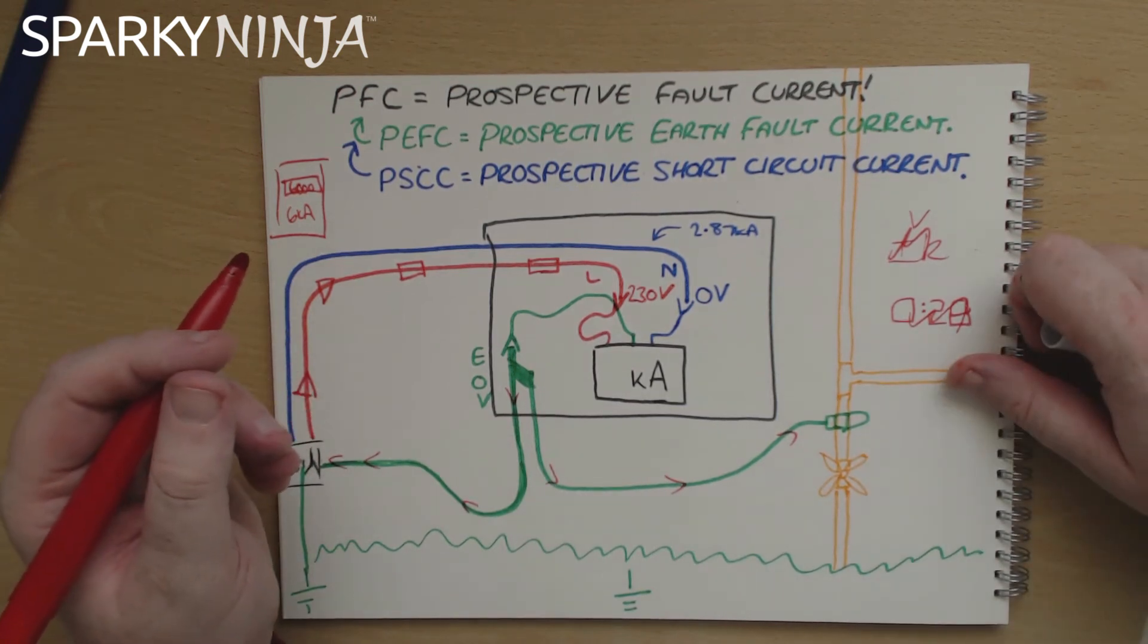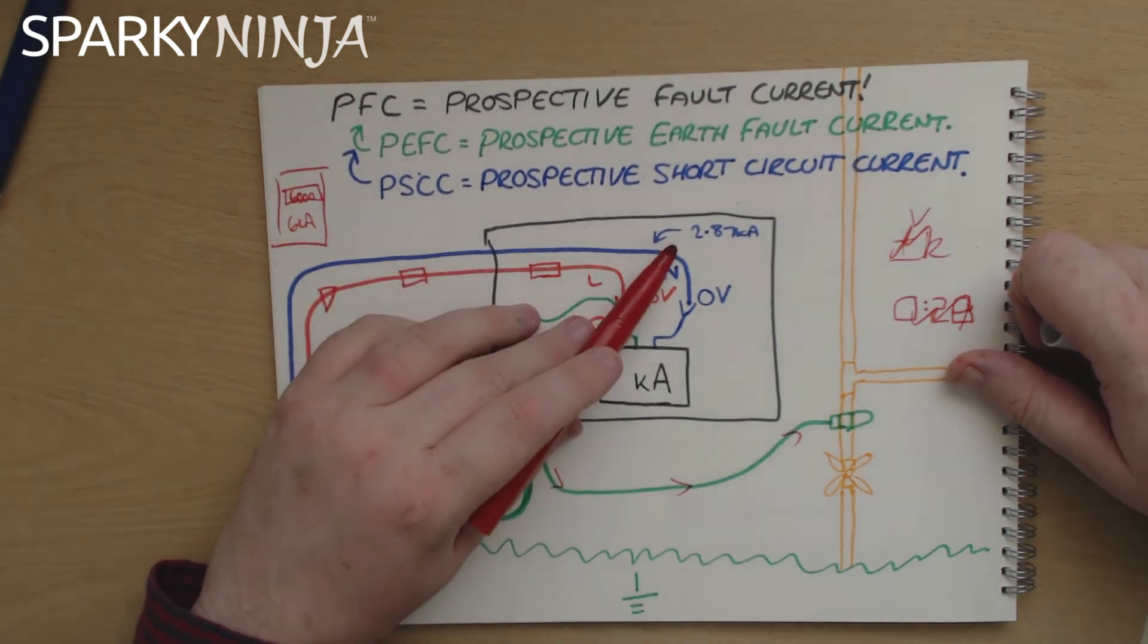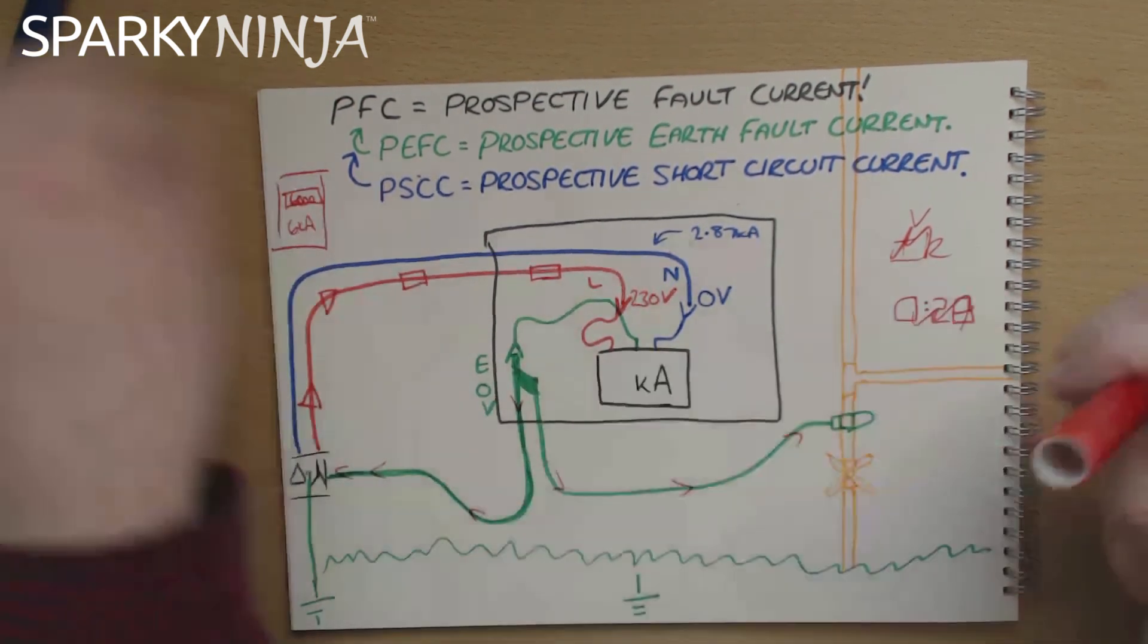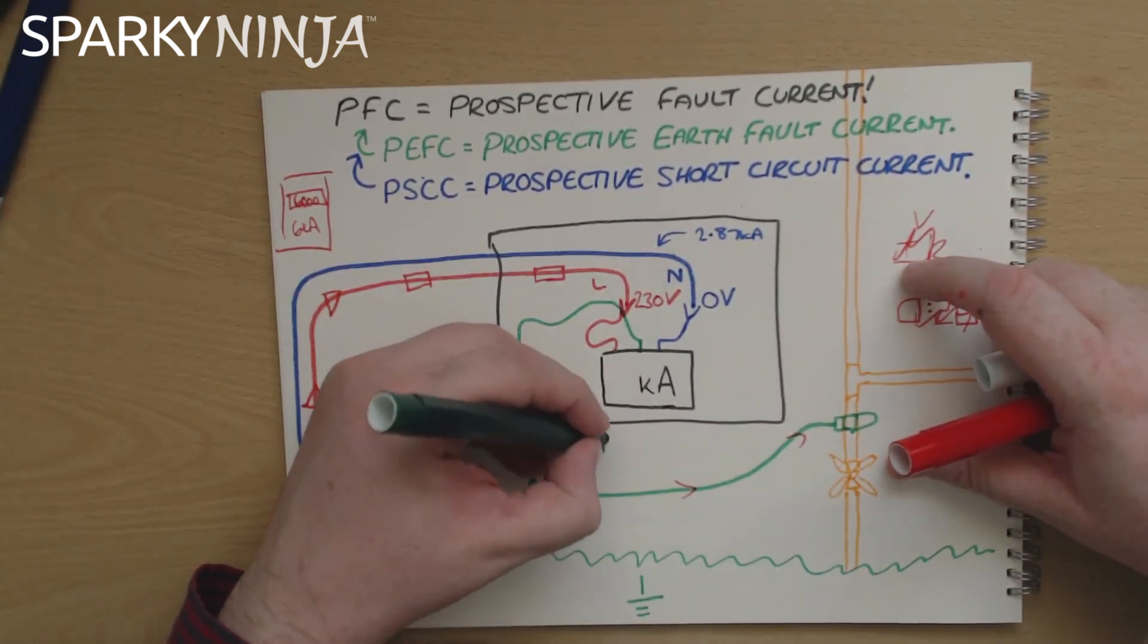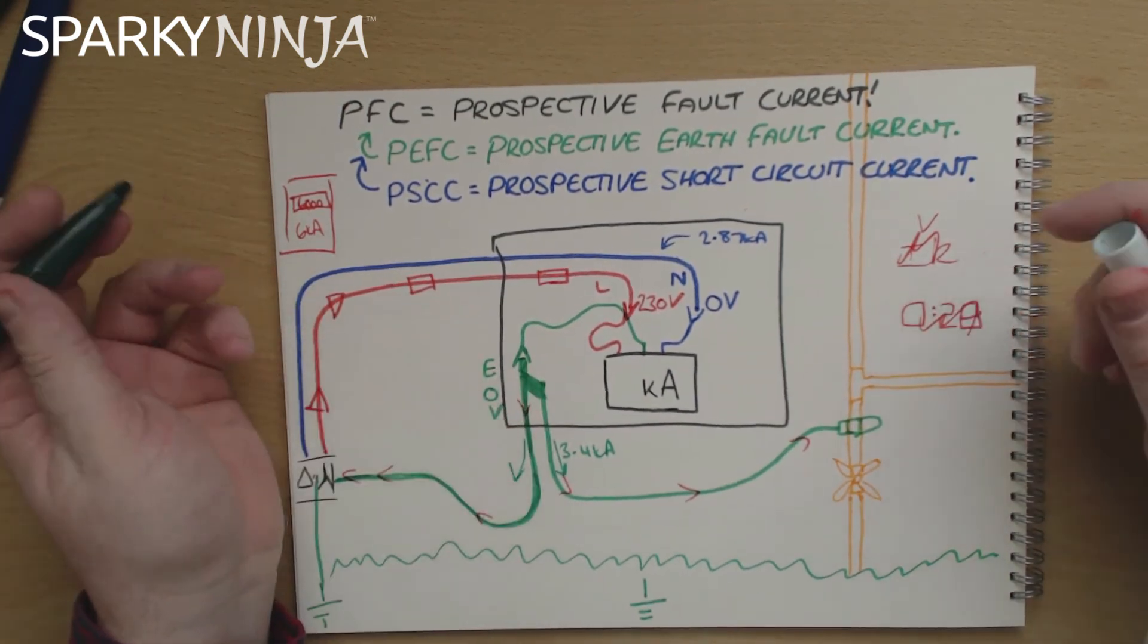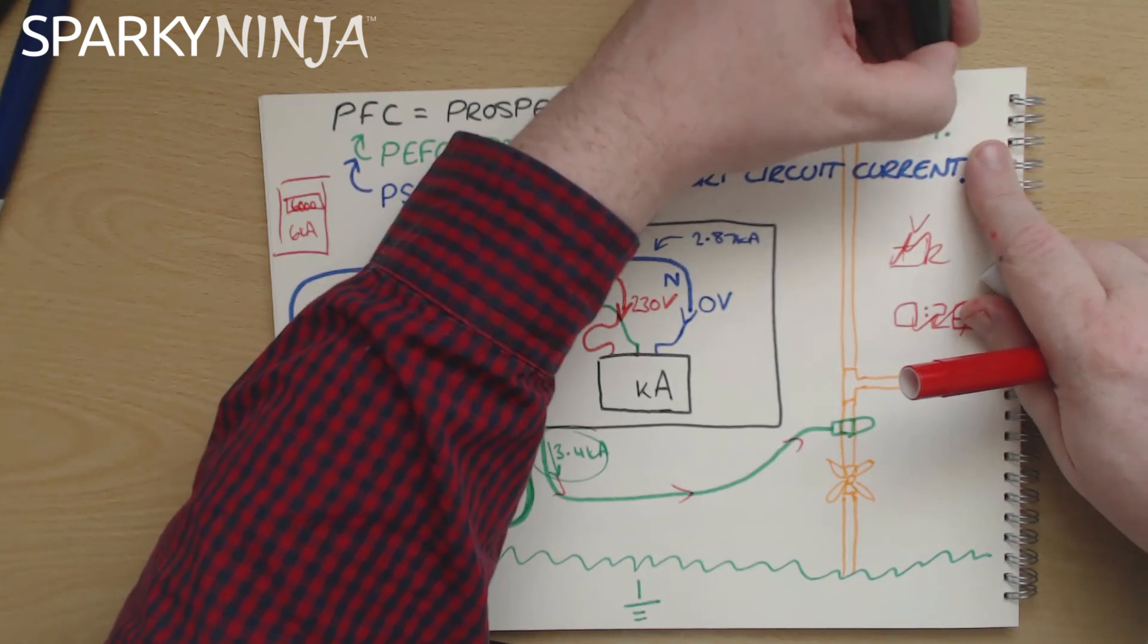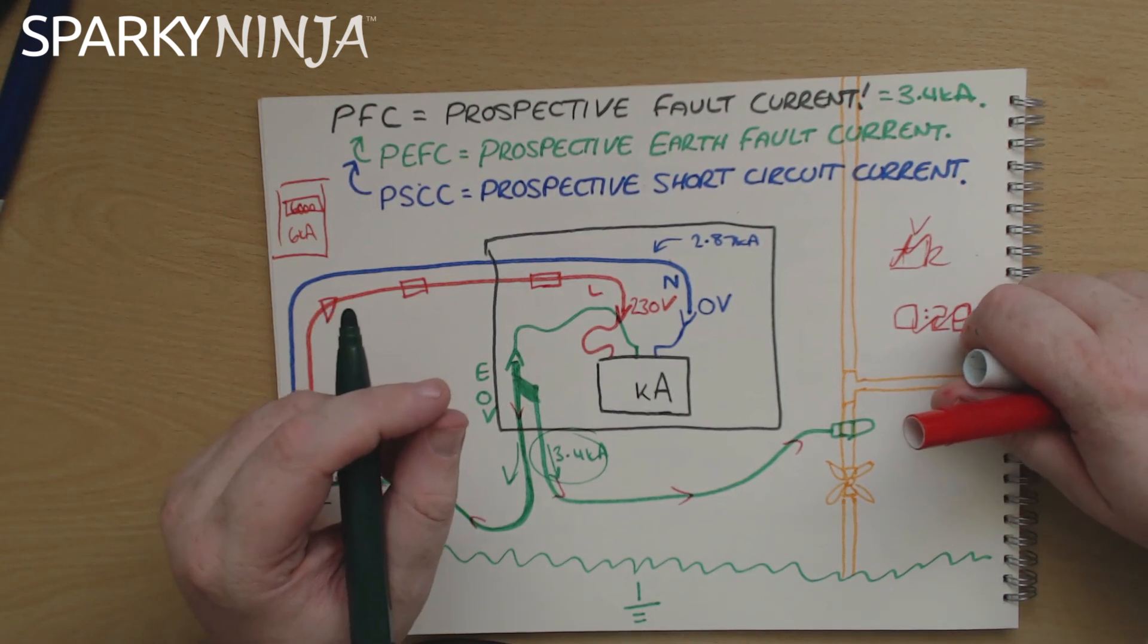Now so when you do the prospective fault current test always put your bonding back or put your earth back in after the Zs before you do this test and again that could be a problem if your tester has just given you both numbers at the same time tough you have to do the test again and press the button again that's the way that it works I'm afraid. So we've got the PSCC of 2.87 I've now measured let's call this something like 3.4. 3.4 kA all right and it's simply a case of recording the highest so in this case the 3.4 kA is recorded as the prospective fault current on the electrical installation condition report or the electrical installation certificate whichever documentation you're filling in.